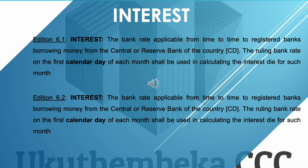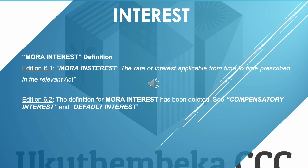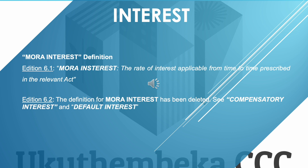Edition 6.1 had a definition for mora interest, which was 'the rate of interest applicable from time to time prescribed in the relevant act.' In Edition 6.2 this definition no longer exists — it has been deleted in its entirety. Edition 6.2 now instead includes definitions for compensatory interest and default interest.